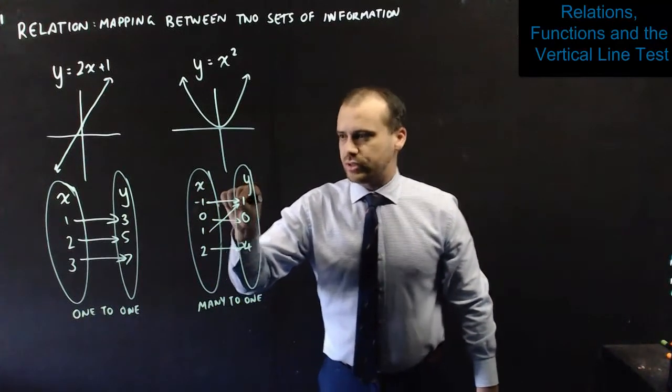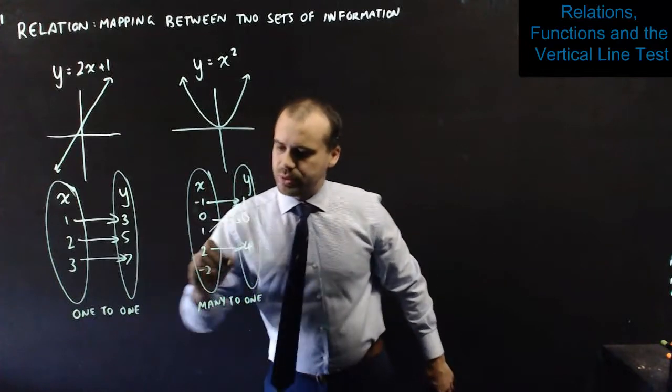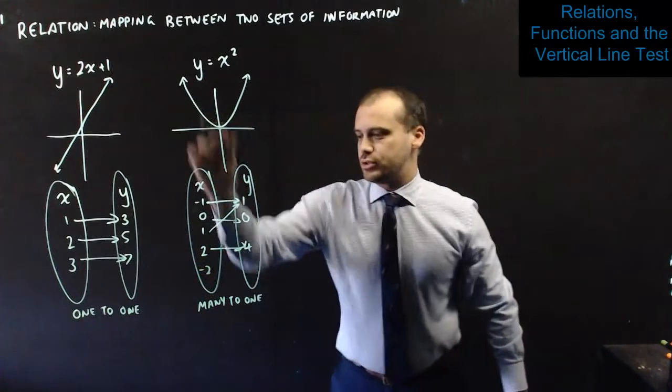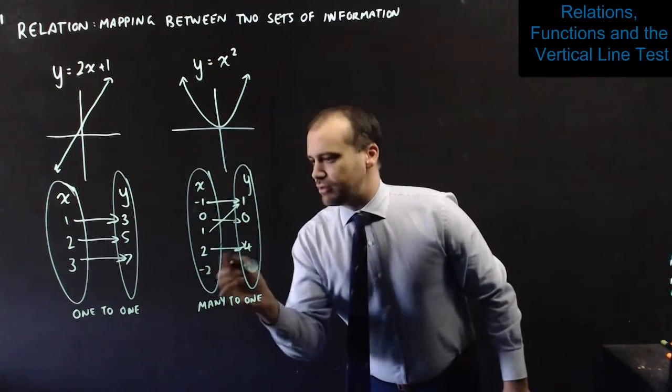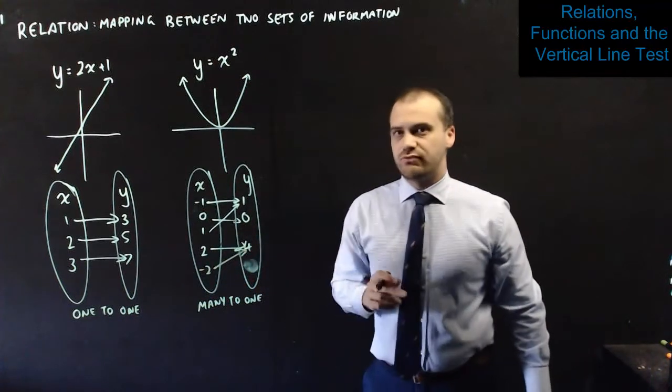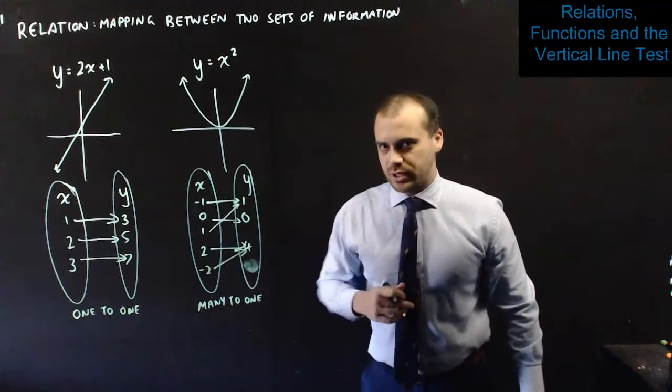to one y value. I can put one more in here to show you exactly what I mean. Negative 2 squared is 4. I don't need to write another 4 in there. Negative 2 is 4. So, a many-to-one relation.